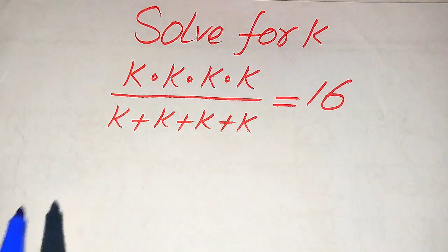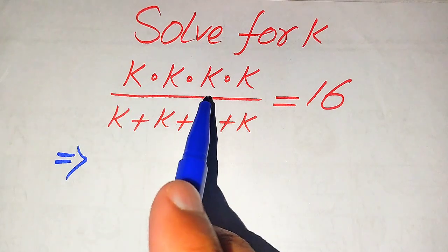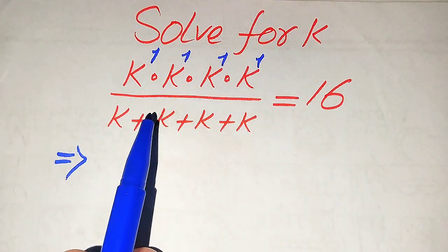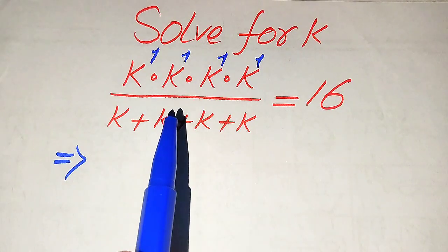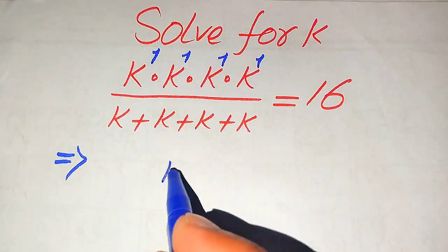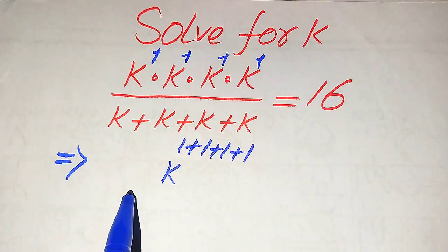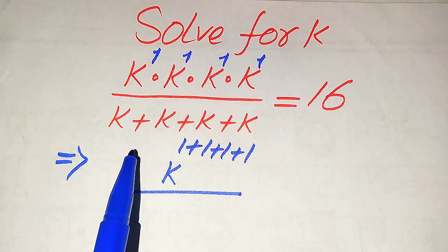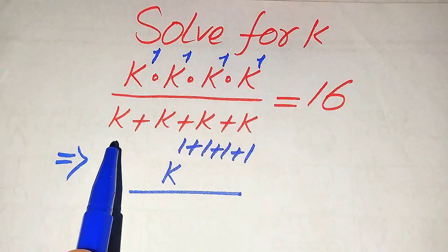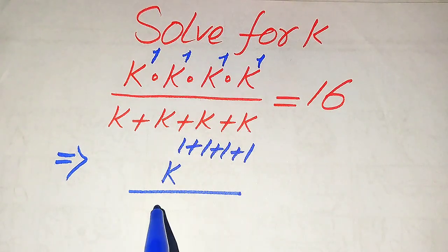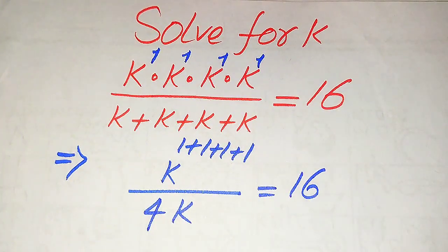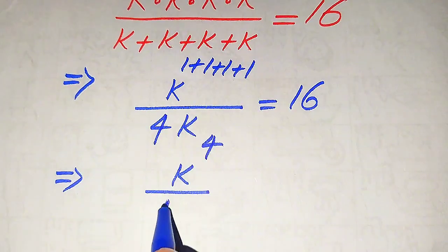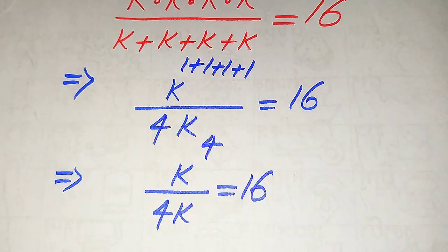First, you need to focus on the numerator term. You see here this k is multiplied 4 times, and all of the exponents of k are 1. Since the bases are the same, we use the exponential rule and add the exponents, getting k to the power of 1 plus 1 plus 1 plus 1. For the denominator, k is added 4 times with coefficients of 1, so we get 4k. This gives us k to the power of 4 divided by 4k equals 16.